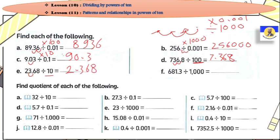Divided by 1000: so go back three digits — one, two, three. That will be 0.6813.